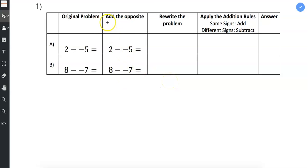In this column we need to add the opposite, so we're changing subtraction to addition. So look at this first example, 2 minus a negative 5. Well the subtraction becomes addition and the negative 5 becomes a positive 5.